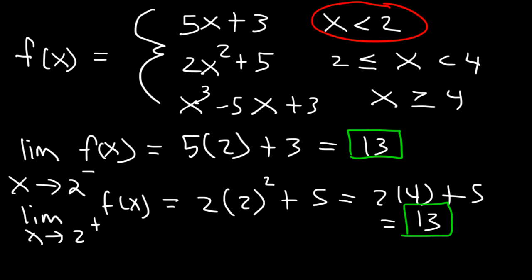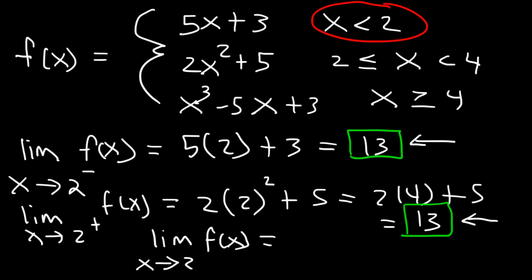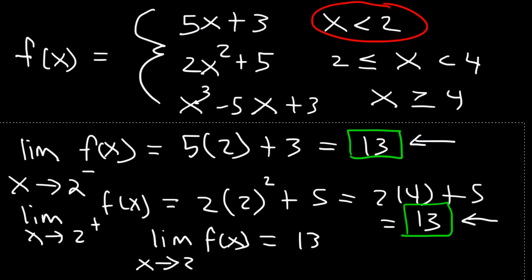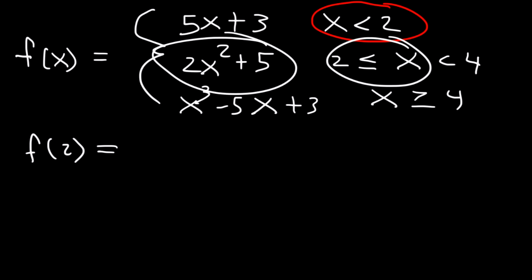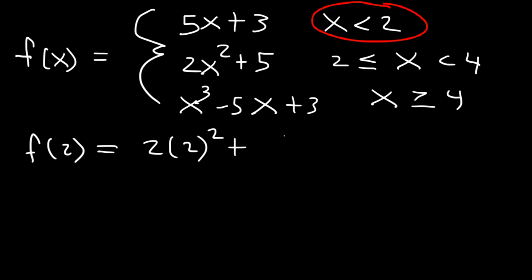The limit as x approaches 2 from either side is 13, because the left-sided and right-sided limits are the same. Now, what is the value of f(2)? We use 2x squared plus 5 because x equals 2 is included in that piece, which gives us 13. So f(2) is defined and equals 13.